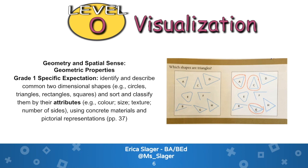Beginning with level zero of the taxonomy — visualization — students are able to sort shapes based on what individual shapes look like. For example, students can identify a circle only because it looks like a circle. Shapes are judged by their appearance and generally viewed as a whole rather than by distinguishing parts. Students at this level use basic shape names that usually offer no explanation, or they associate shapes with familiar objects. This corresponds to the grade one curriculum expectation: students identify and describe common two-dimensional shapes and sort and classify them by their attributes.